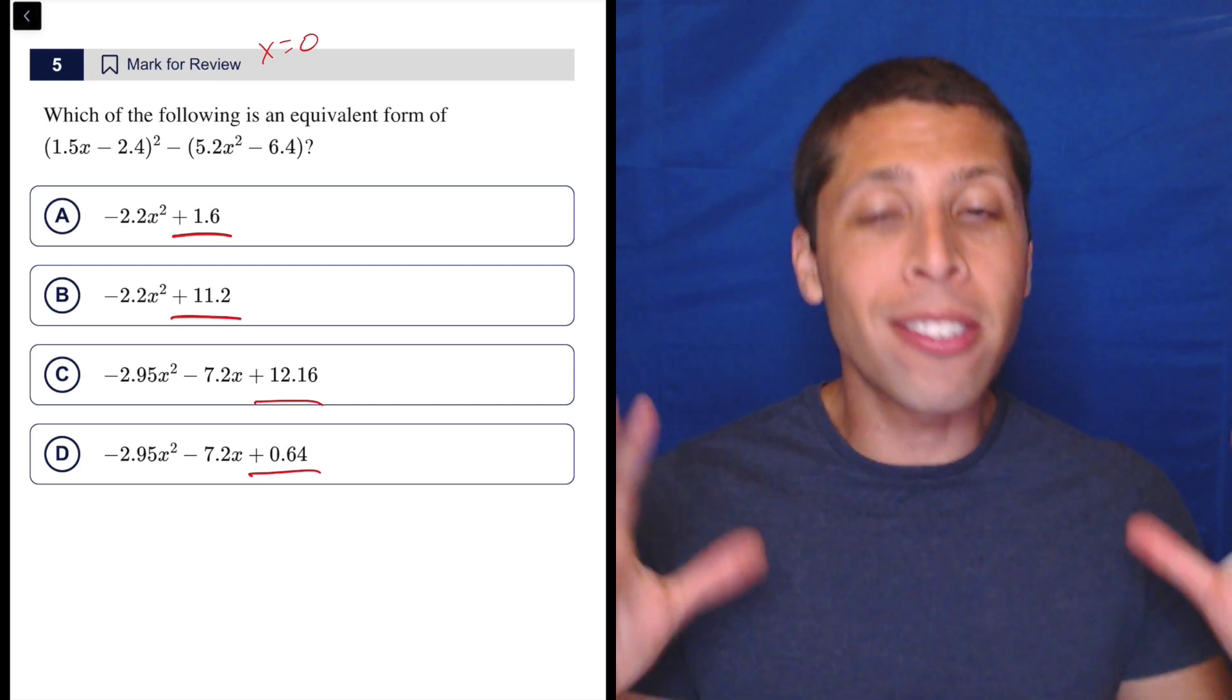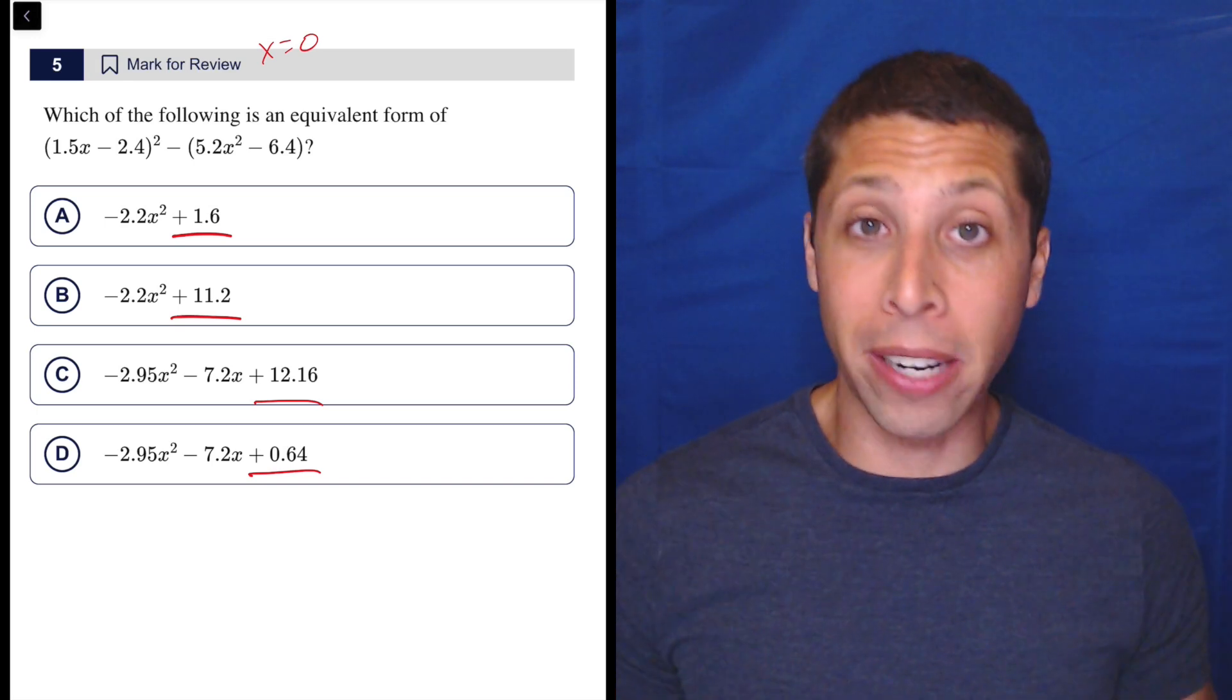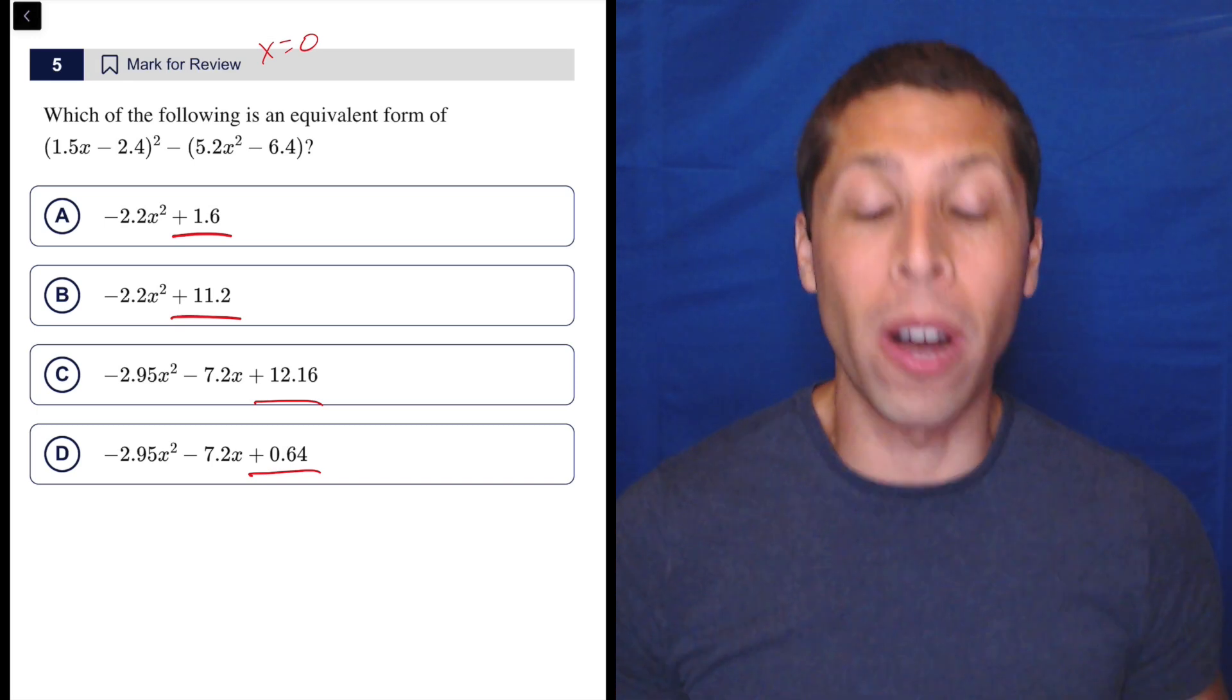So if I just make x equal to zero, I'm going to be able to, yes, still have to deal with some decimals, but at least I can do that in the calculator more easily, and I don't have to worry about any algebra issues, and I'm going to get down to one right answer.